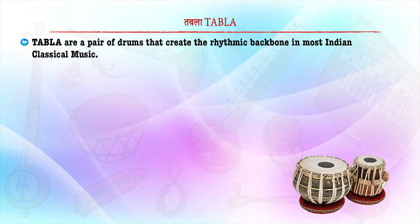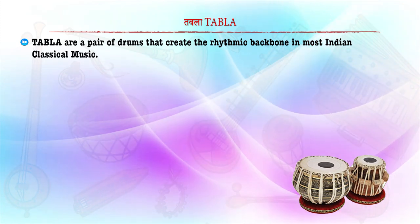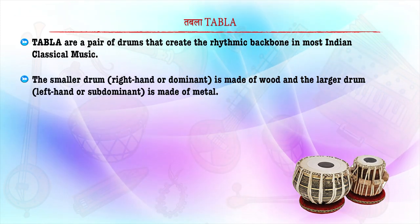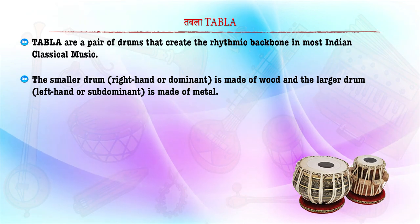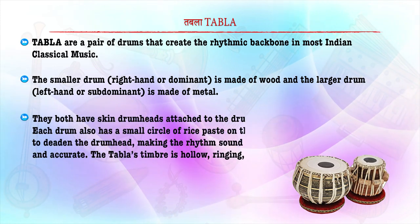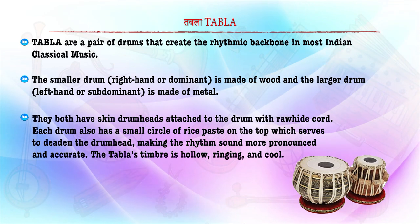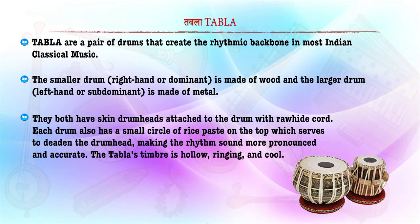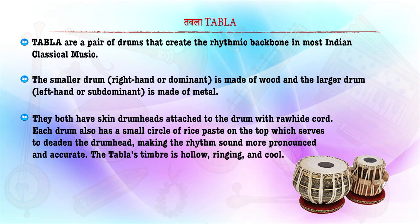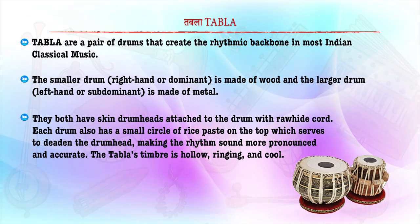Tabla are a pair of drums that create the rhythmic backbone in most Indian classical music. The smaller drum, played with the right or dominant hand, is made of wood, and the larger drum, played with the left or subdominant hand, is made of metal. Both have skin drum heads attached with raw hide chord. Each drum also has a small circle of rice paste on top which serves to deaden the drum head, making the rhythm sound more pronounced and accurate. The tabla timbre is hollow, ringing and resonant.